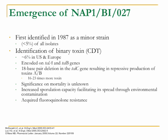In the late 1980s, the BI/027 strain was less than 5% of cases, and in the US and Europe it's about 6%. It's encoded on the TCDA and TCDB genes, and a mutation with an 18-base pair deletion in TCDC causes 16 to 23 times more toxin production. This also results in increased sporulation capacity, facilitating spread through environmental contamination on surfaces like bed rails.